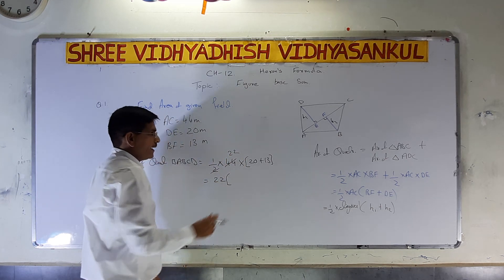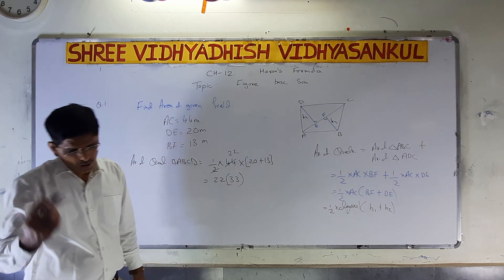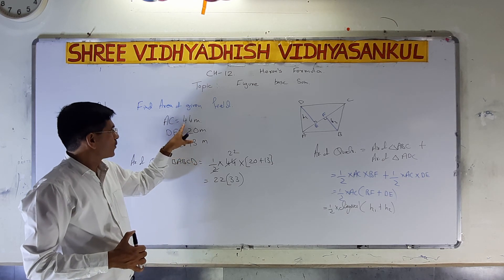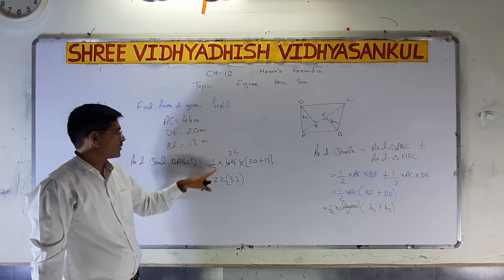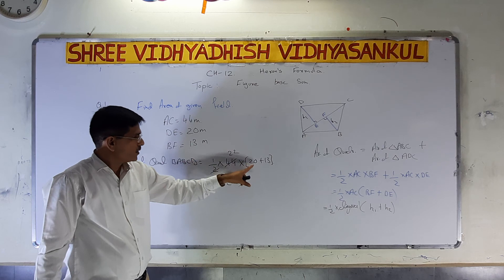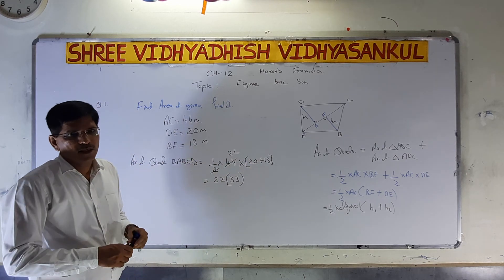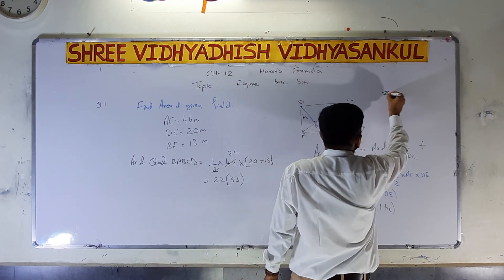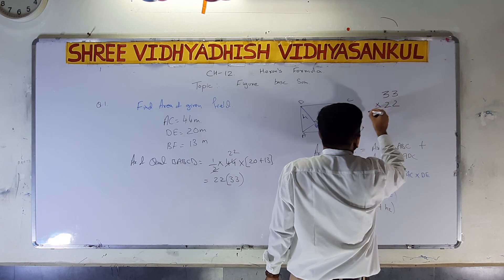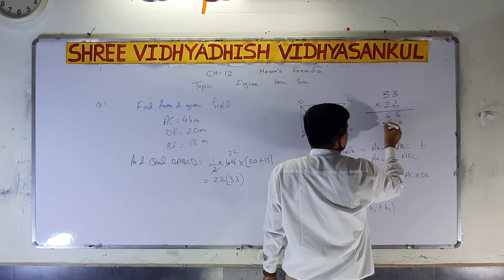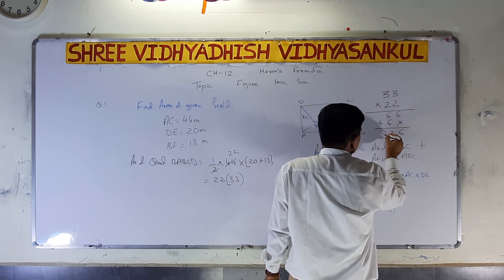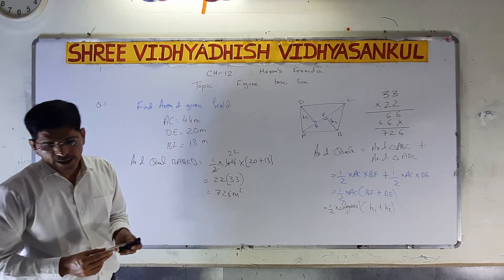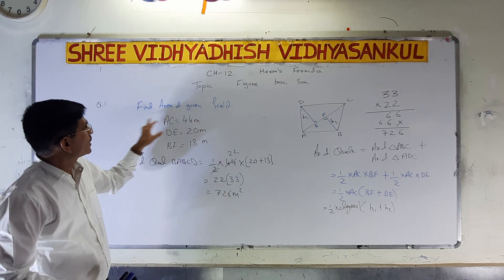We can simplify: half of 44 gives 22. So it is 22 into (20 plus 30), which is 22 into 50. Multiplying 22 into 50 gives 1100. So the area is 1100 meter square. That is the area of the given field.